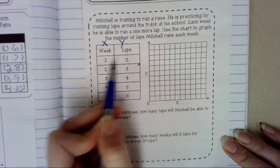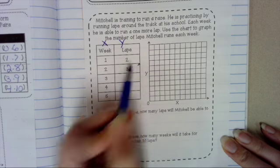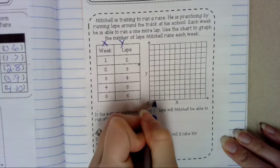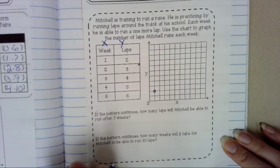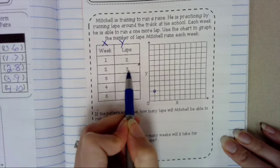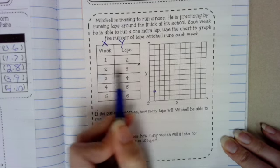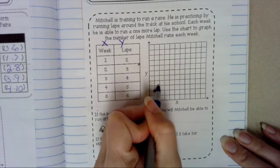And we're going to graph them. So week 1, 2 laps. X, Y. 1, 2. So we're going to go right 1. Up 2. Week 2, 3 laps. X, Y. 2, 3. We're going to go right 2. Up 3.